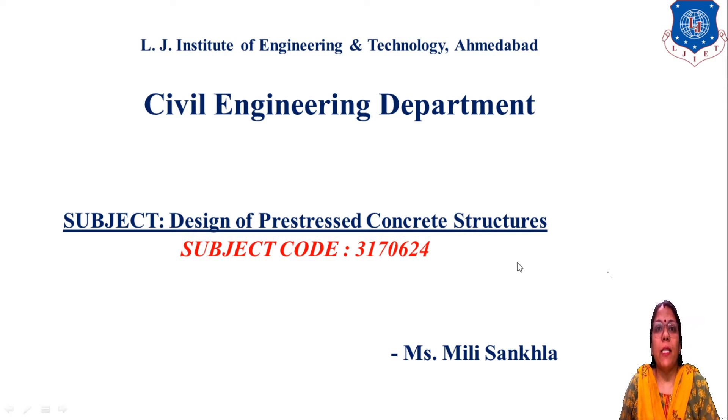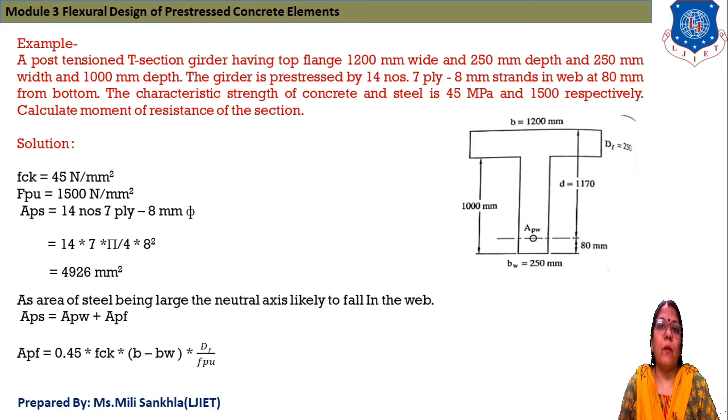Good morning students, myself Milly Sankala. Today our subject is design of prestressed concrete structures. We saw the example related to flexural design. Now our next example: A post-tensioned T-section girder having top flange 1200 mm width and 250 mm depth, and 250 mm width and 1000 mm depth at web.